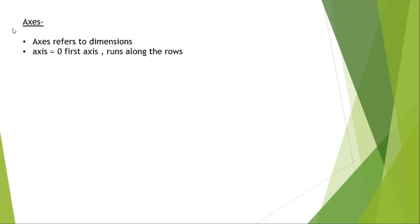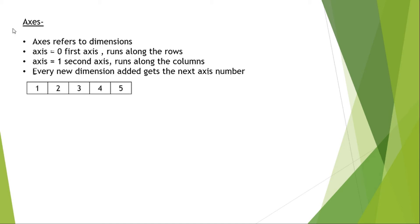Axis equals 1 is the second axis and runs along the columns. Every new dimension which is added gets the next sequential axis number. That means if you're going to add the next dimension, it gets axis equals 2. Let's suppose we are having an array here with data elements 1, 2, 3, 4, and 5. In this we have only one axis, which gets axis number 0.